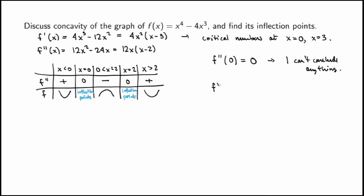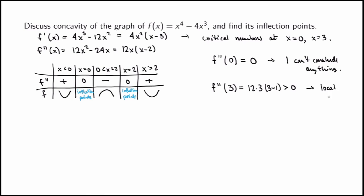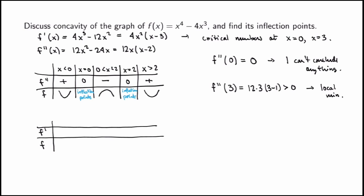For the second critical point: f double prime of 3 = 12(3)(3 − 2) = 12 · 3 · 1, which is positive. That means we're happy — concave up — so x = 3 is a local min. But we still don't know about x = 0, so we need to use the first derivative test there.